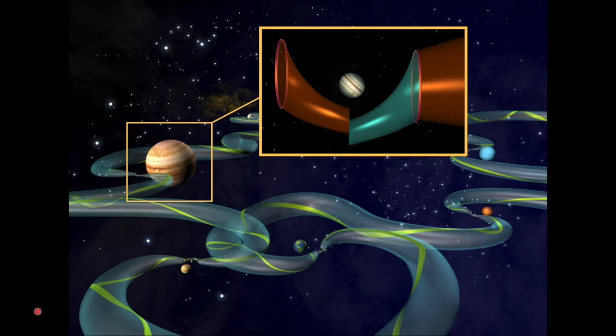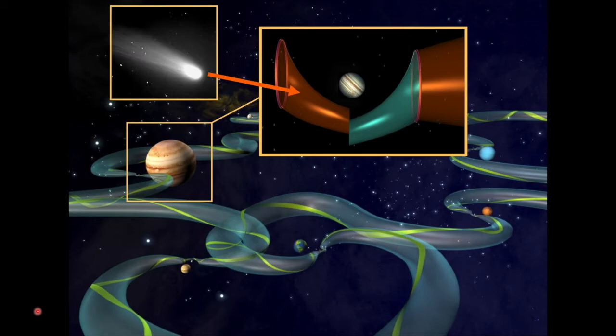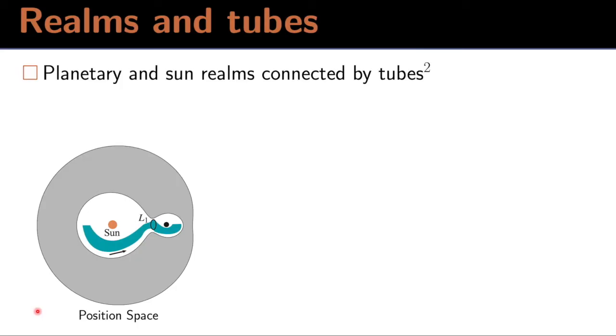So we can consider how this tube structure affects the motion of things in the solar system. We have planetary and Sun realms connected by tubes, which if you were to project just onto the position space, you would see tubes appearing as strips. But up in the three-dimensional energy surface, at least for the planar problem,